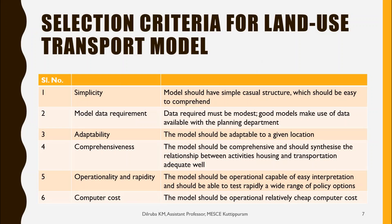There are mainly six selection criteria for land use transport models. The first is simplicity — the model should have a simple causal structure that is easy to comprehend. The second is data requirements — the data required must be modest, and good models make use of data already available with the planning department, so extensive surveys are not needed.